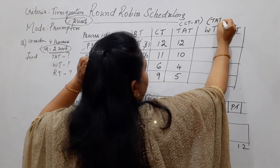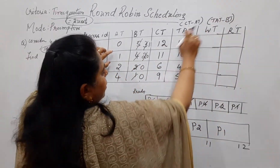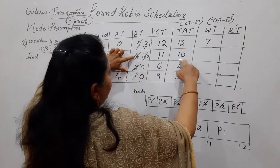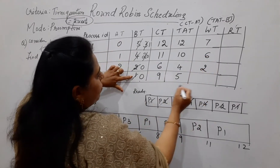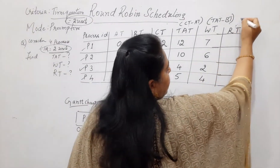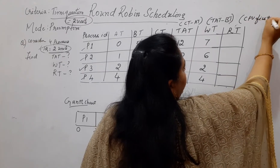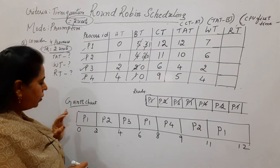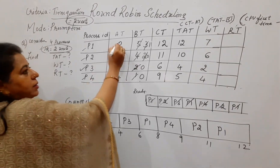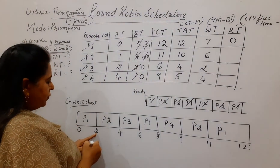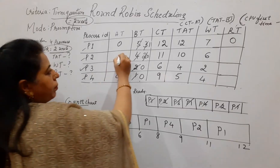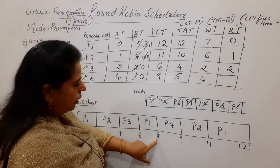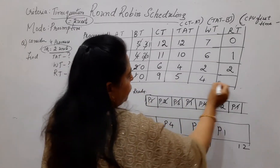Waiting time equals turnaround time minus burst time: P1 = 12 − 5 = 7, P2 = 10 − 4 = 6, P3 = 4 − 2 = 2, P4 = 5 − 1 = 4. Response time is the first time a process got the CPU minus its arrival time: P1 = 0 − 0 = 0, P2 = 2 − 1 = 1, P3 = 4 − 2 = 2, P4 = 8 − 4 = 4.